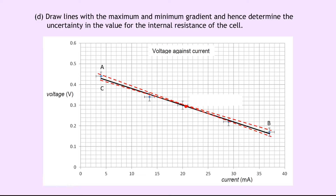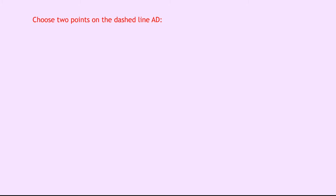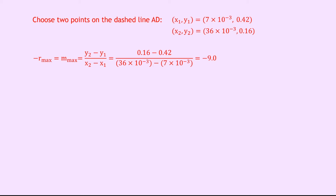I'll label the corners A, B, C, and D to make the calculation easier. For the dashed line AD, I've chosen the coordinates (7×10⁻³, 0.42) and (36×10⁻³, 0.16). To find the maximum gradient or maximum internal resistance: −R_max = m_max = (y₂ − y₁)/(x₂ − x₁), which gives −9.0. So R_max = 9.0 ohms.